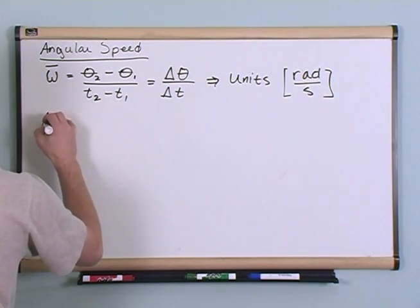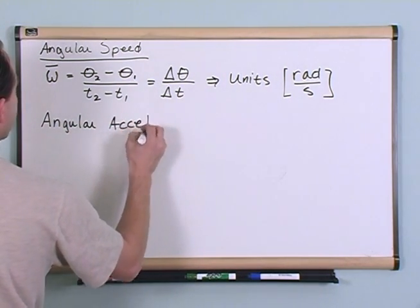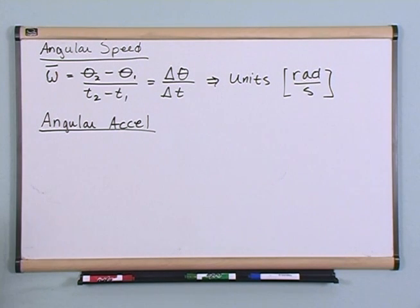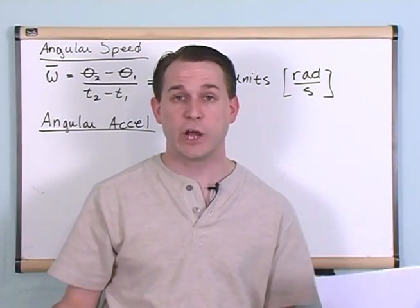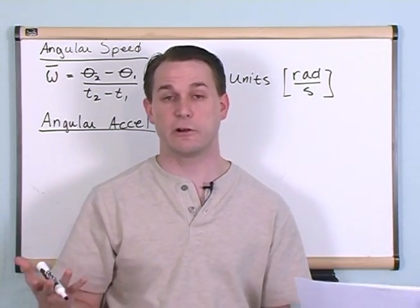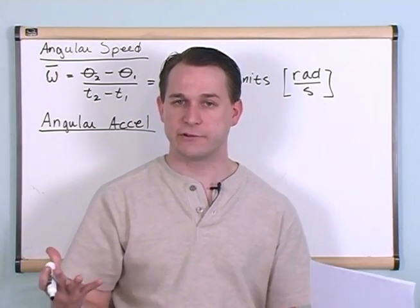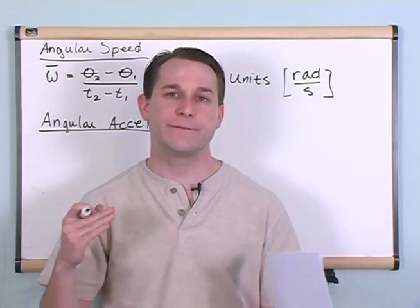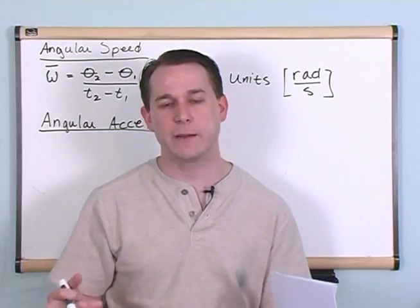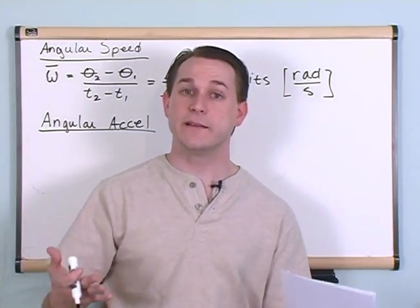We also have another quantity called angular acceleration. We're going to define the same types of concepts we defined before. When you have linear acceleration, it is the change in velocity — how much are you speeding up or slowing down, how fast is your velocity changing per unit time. Angular acceleration is no different; it's just that you're talking about an angle. This hand might be speeding up or slowing down, so the speed may not be constant. Each case involves some acceleration — changing angular velocity every second.